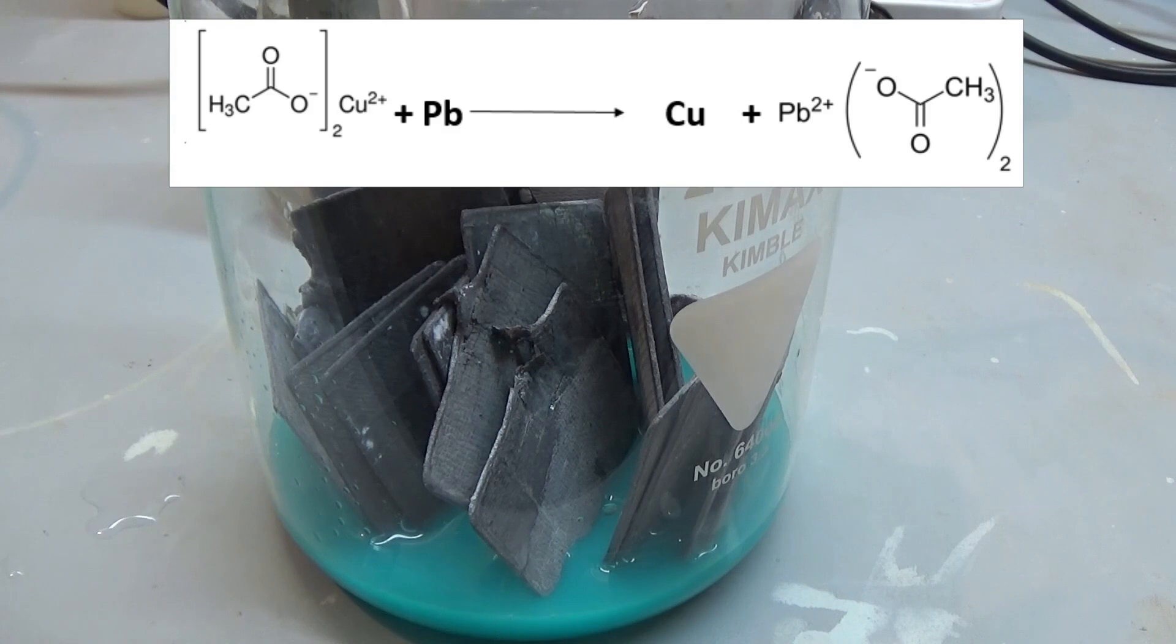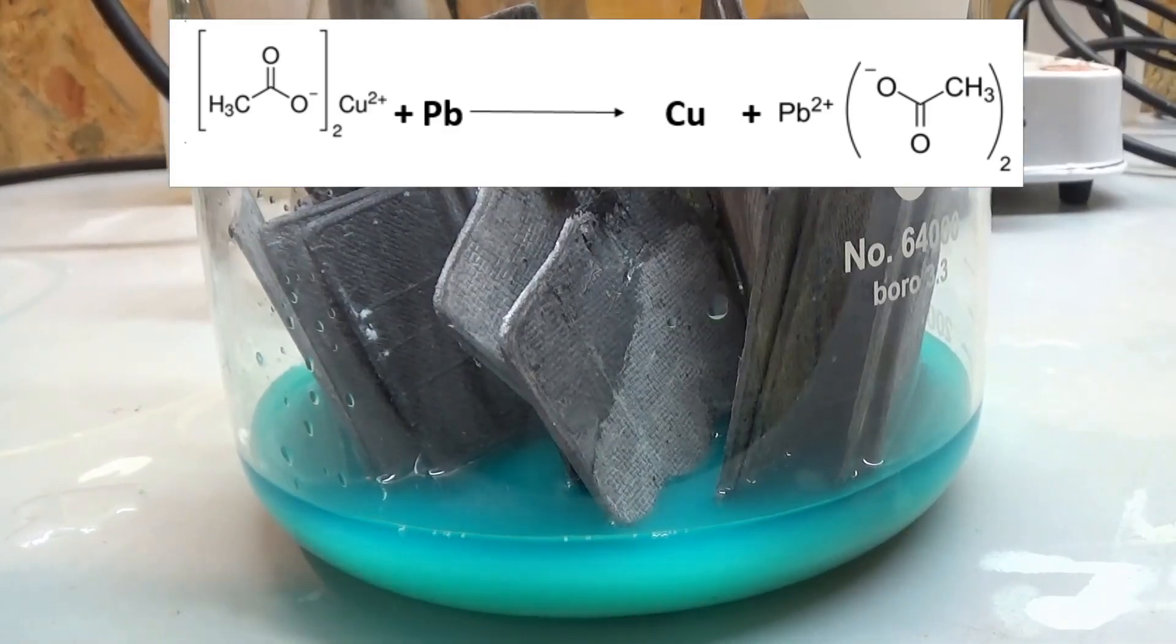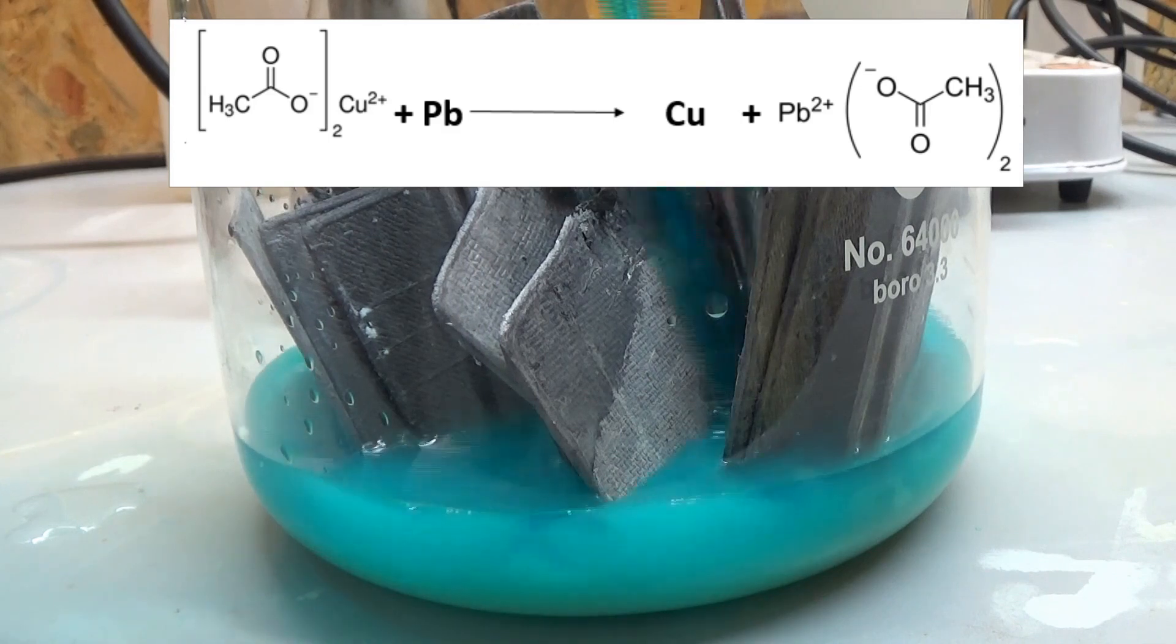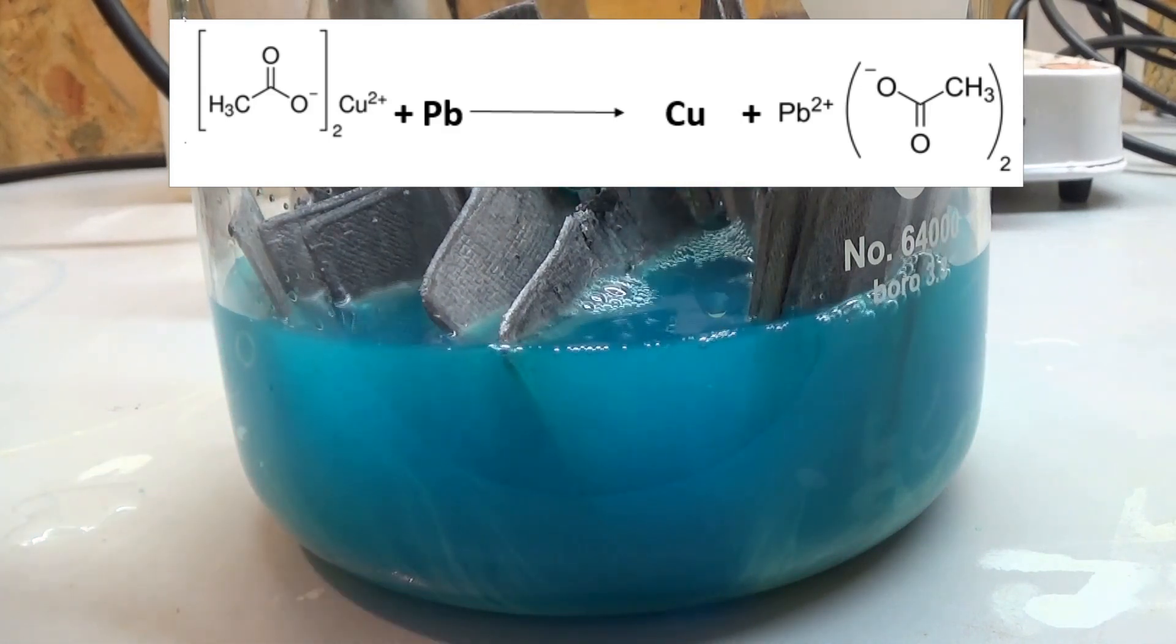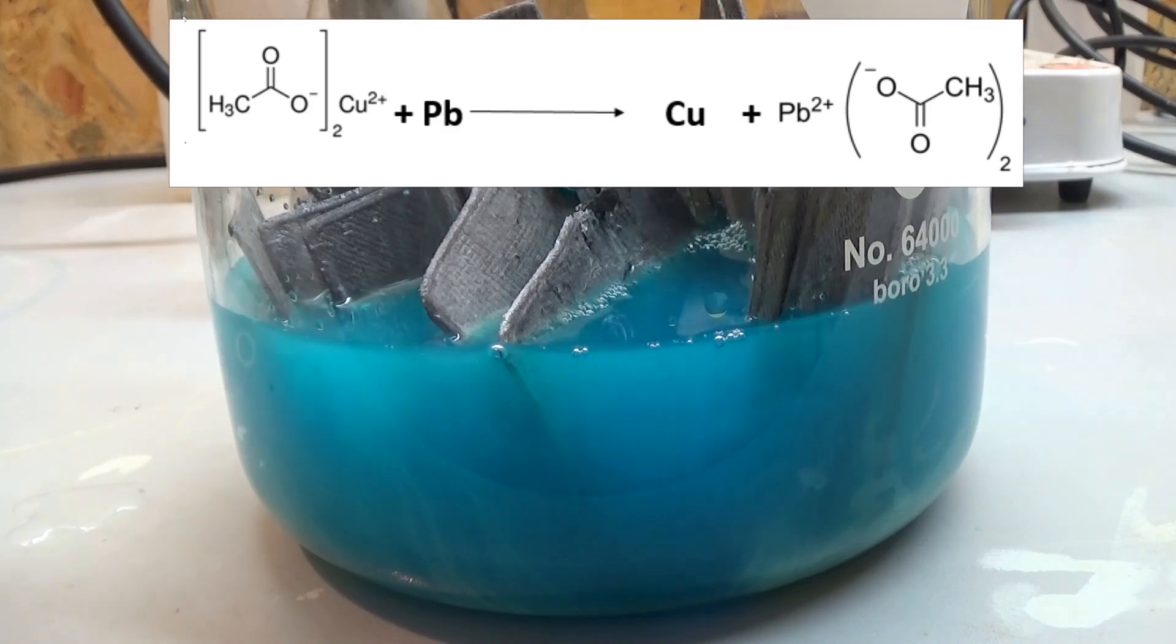What's happening is a redox type replacement reaction where the copper 2 plus ions are reduced to elemental copper which crashes out. The elemental lead gets oxidized to lead 2 ions and forms lead acetate with the acetate anions from the copper acetate.